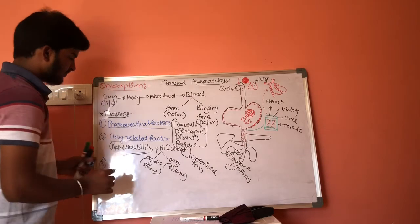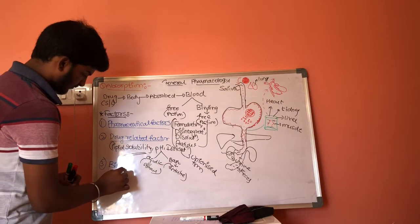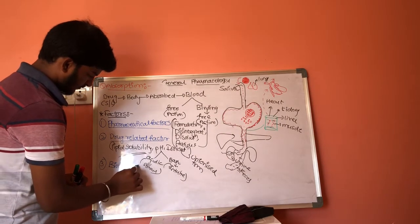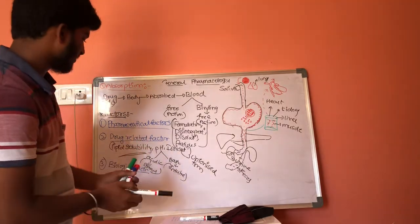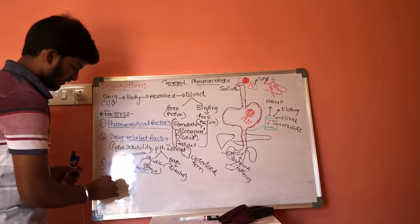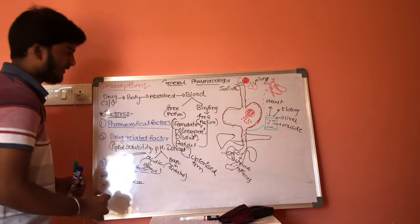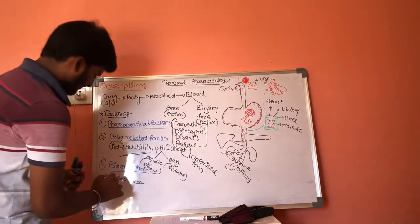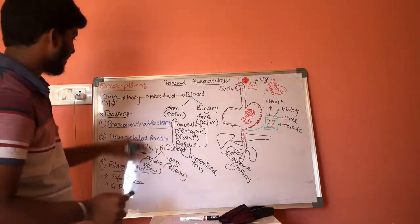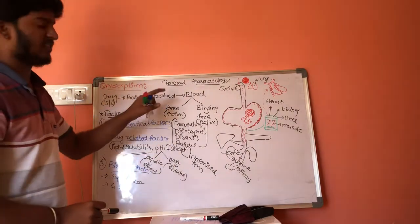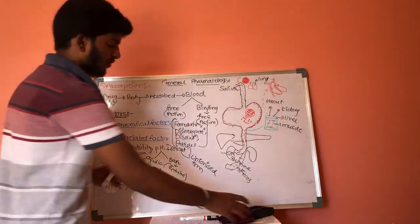The third factor is biological factors, which include surface area and gastric emptying time. If the surface area of the drug is very less, it can be absorbed easily. This covers absorption, the first process in pharmacokinetics.